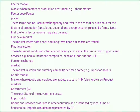Exports: goods and services produced locally and then sold for consumption outside the borders of the country. Factor market: markets where factors of production are traded. Factor cost: refers to the cost or price paid for the factors of production — labour, land, capital, and entrepreneurship — used by firms. Financial market: markets where both short- and long-term financial assets are traded. Financial sector: financial institutions not directly involved in the production of goods and services, e.g. banks and insurance companies.